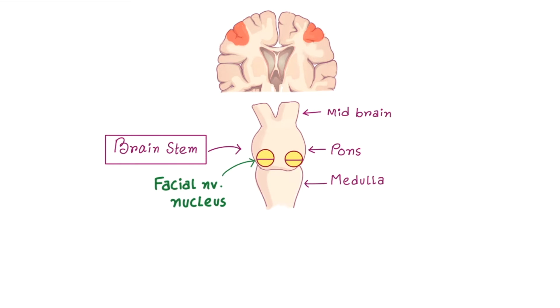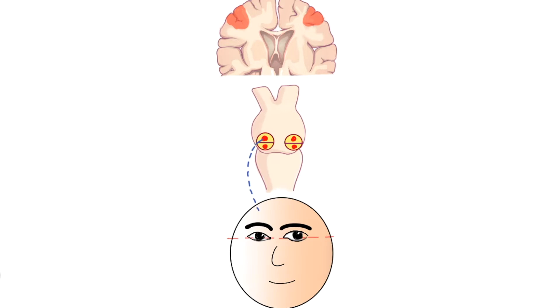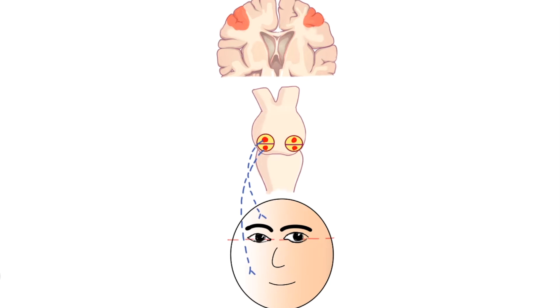The facial nucleus is conceptually divided into two halves. The upper half provides the fibers to supply the upper face muscles and lower half provides the fibers for lower half of the facial expression muscles.